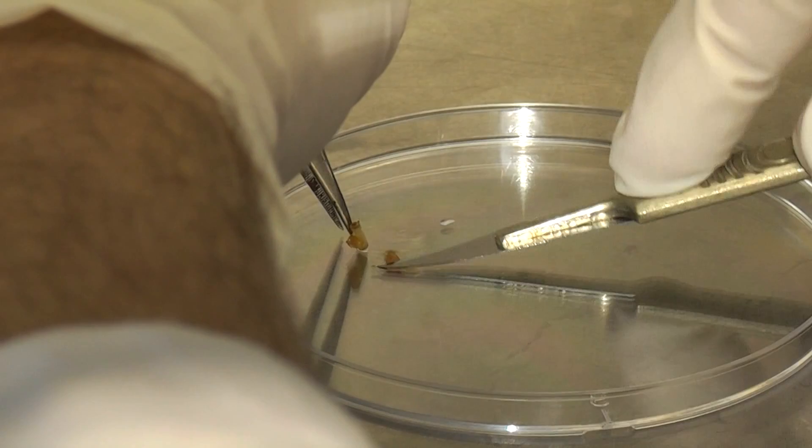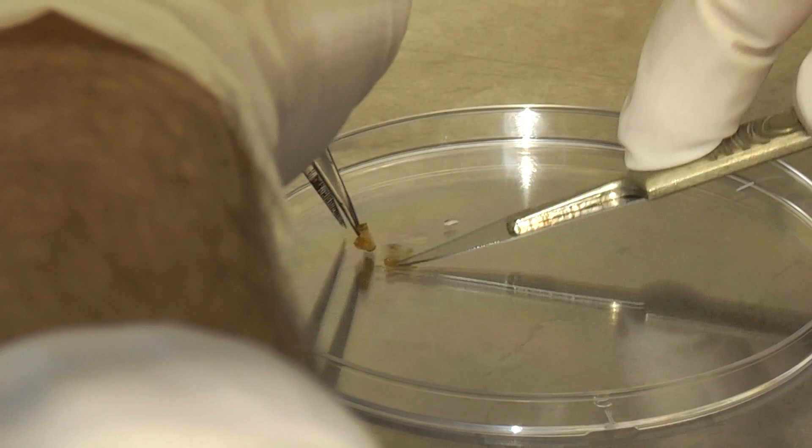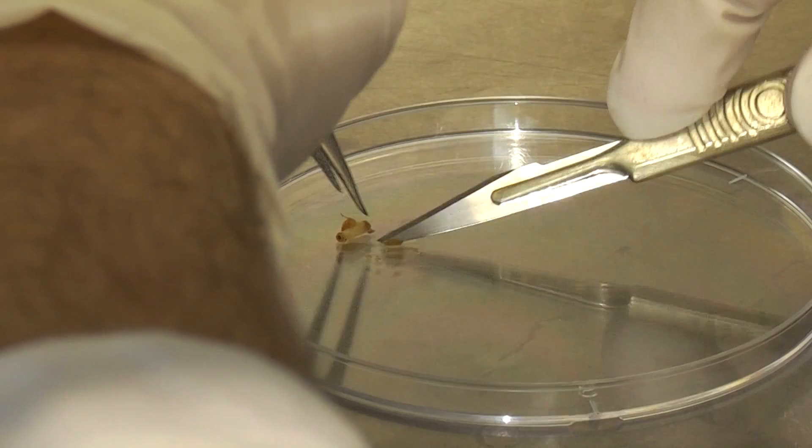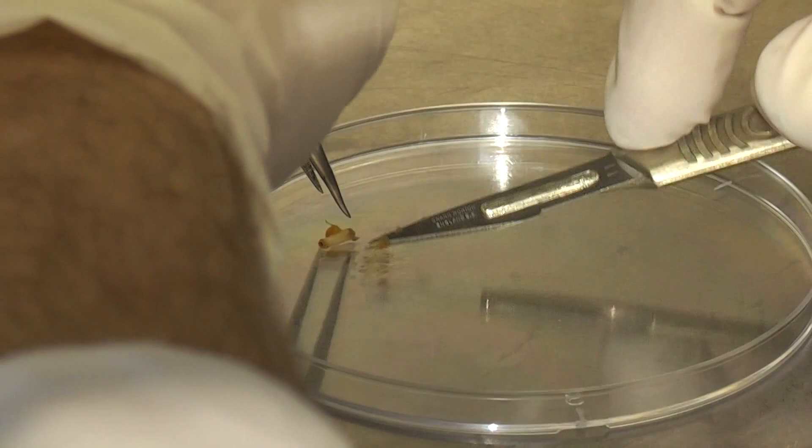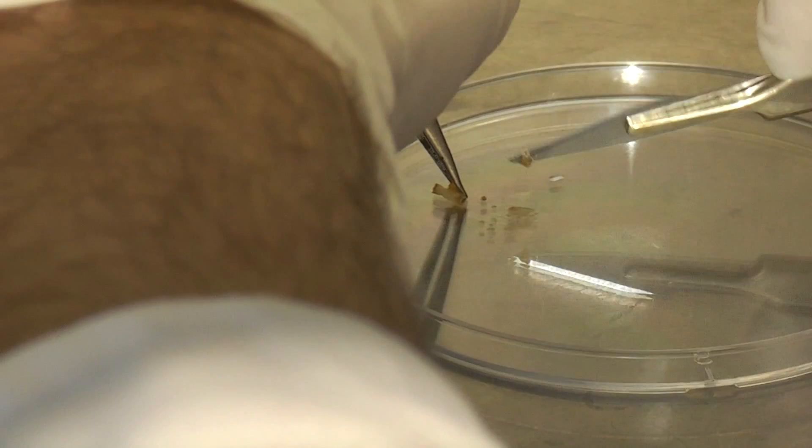So what I'm doing now is just squashing the nodule after I've cut it open. I'm squashing it so that I end up with a little bit of liquid here, and that liquid will contain the rhizobia that were present in the nodule. And now what I do is take those two away. Now they're not sterile anymore so I'll have to use sterile ones before I do the next nodule.